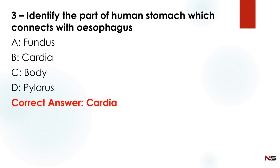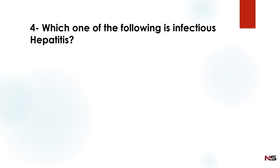Identify the part of the human stomach which connects with the esophagus. Options: A) fundus, B) cardia, C) body, D) pylorus. The answer is option B — cardia.